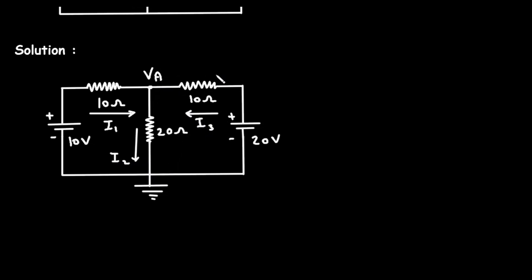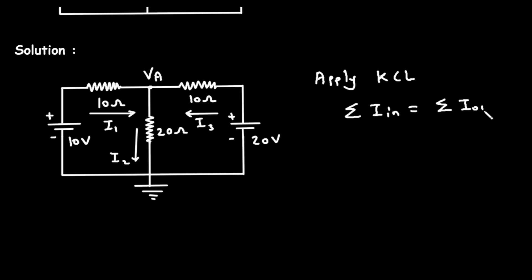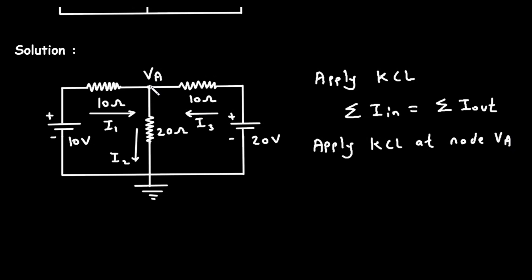Now we will apply KCL, that is Kirchhoff's Current Law. According to KCL, the summation of all the currents entering a node is equal to the summation of all the currents leaving the node. Here at this node we will apply KCL at node VA. The entering currents are I1 and I3, so we can write I1 plus I3 is equal to I2, which is the leaving current.